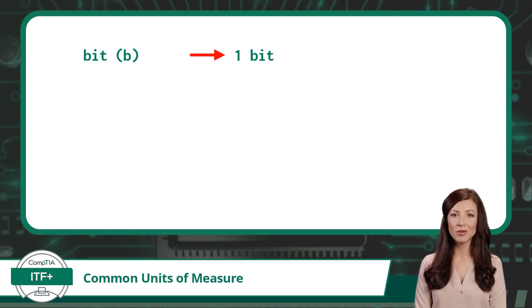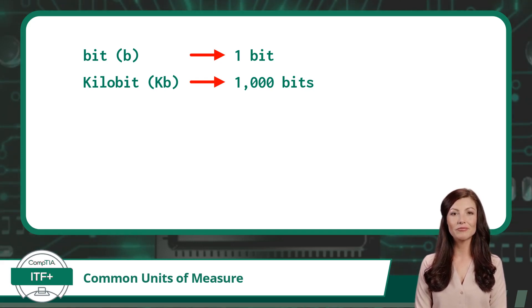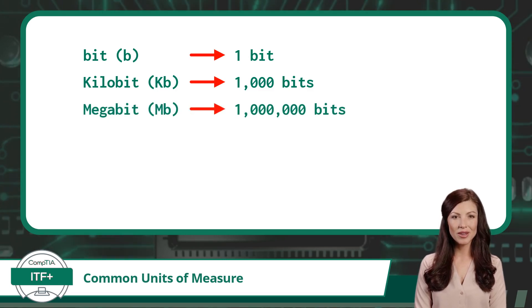Let's start with a single bit and add our first prefix: kilo. Kilo means thousand, so a kilobit equals 1,000 bits. Our next prefix is mega. Mega means million, so a megabit equals 1,000,000 bits.